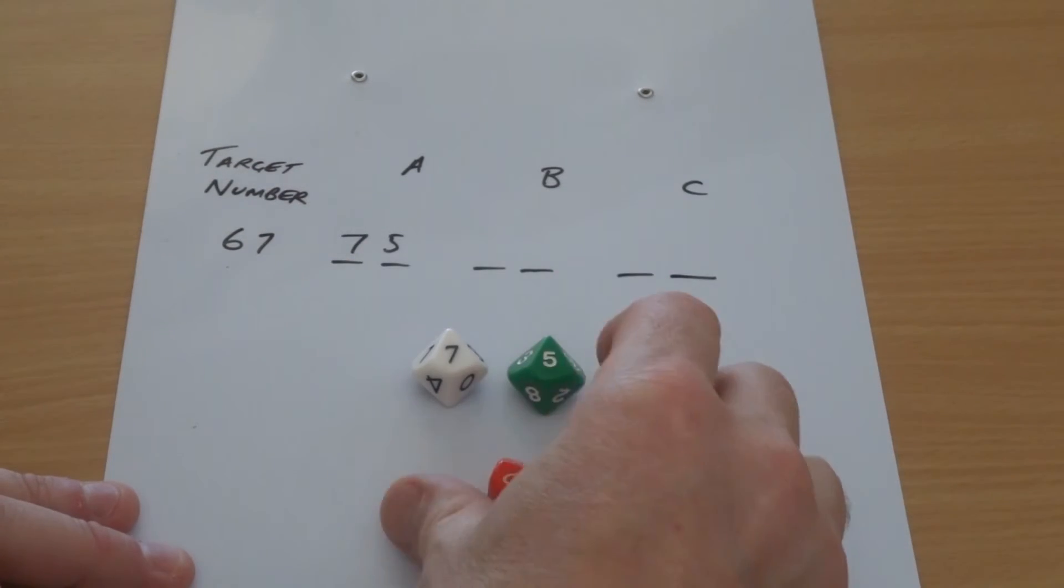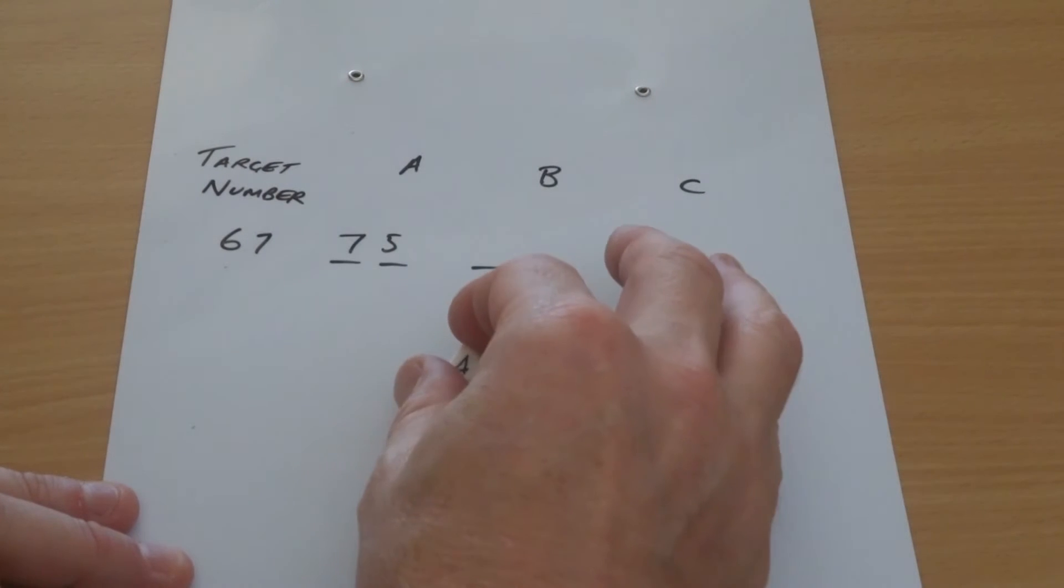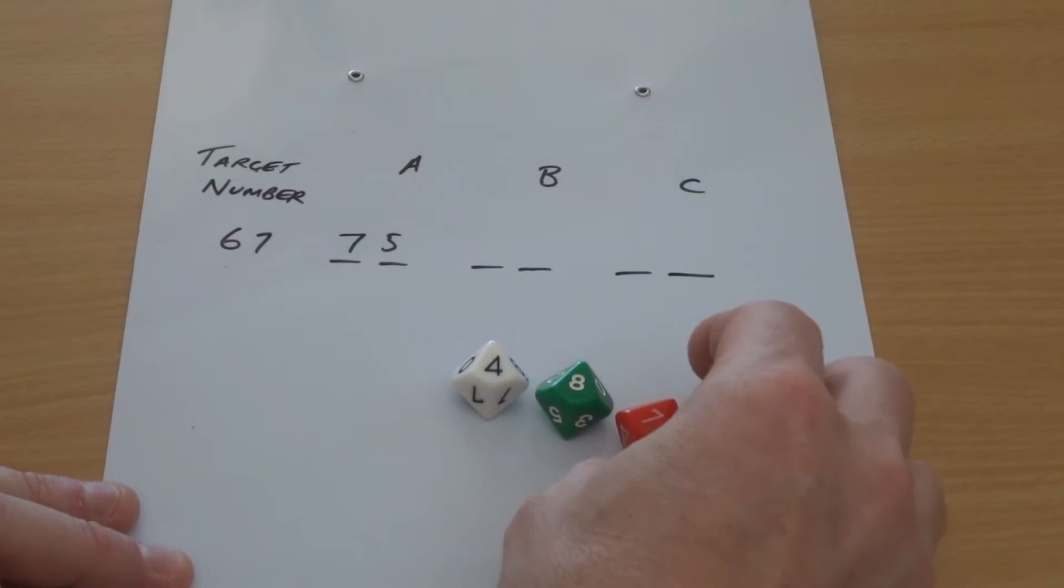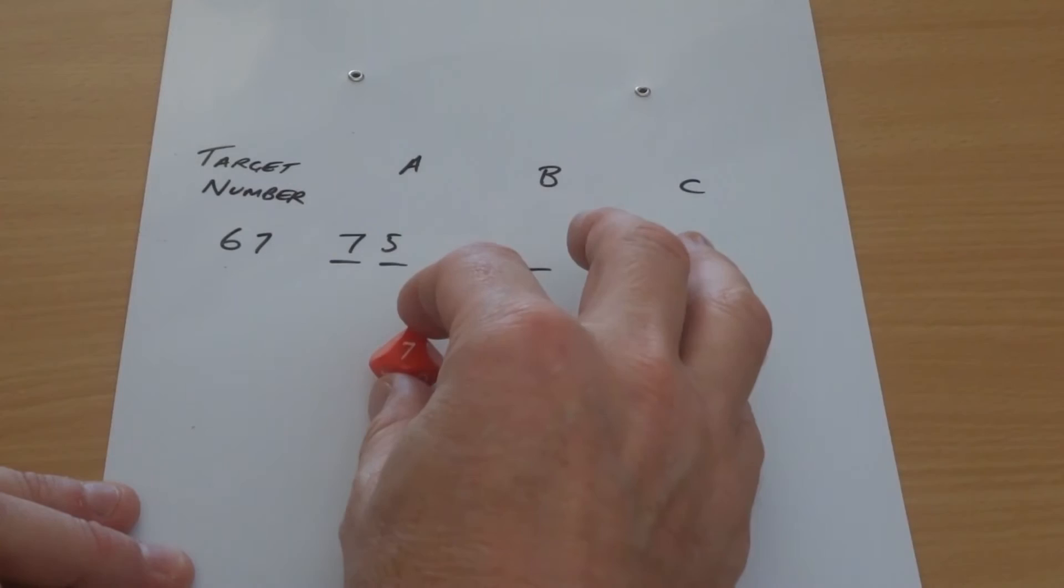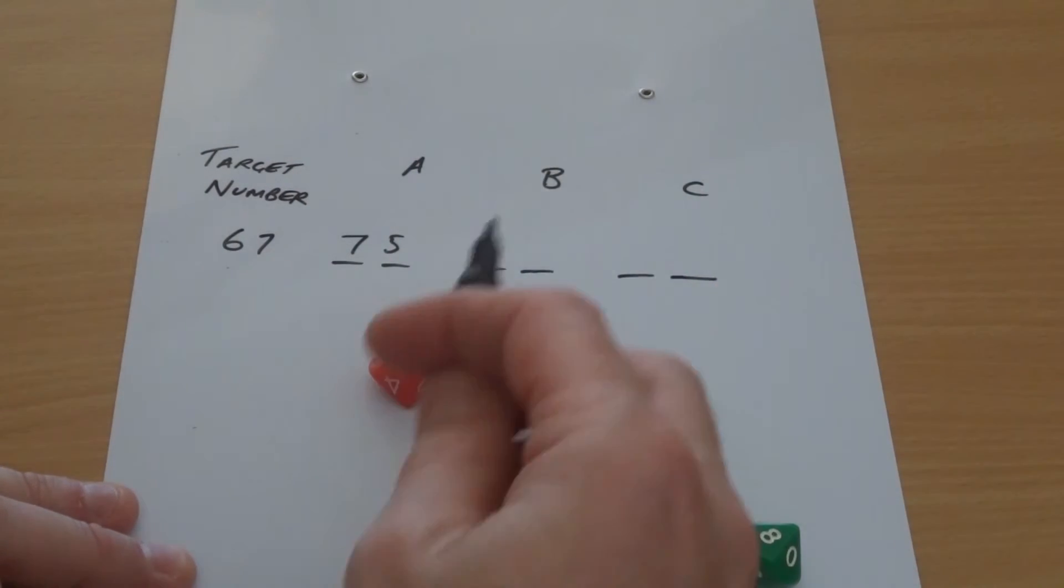Imagine then that we roll again and we've got a different roll of the dice here, and I've got a four and eight and a seven. Well clearly there I'm going to make 74, and so on.